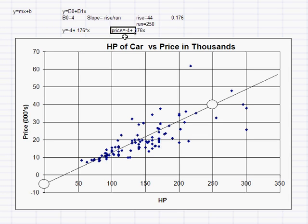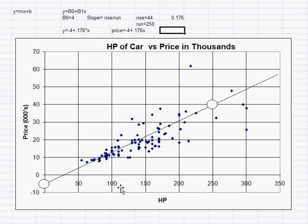There are three things we usually do with these equations. The first is from a statistical standpoint: we could test a hypothesis — do a t-test or something similar. We could test the hypothesis that there is no relationship between horsepower and price, and we can either reject or fail to reject that hypothesis.